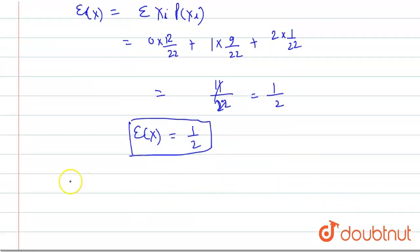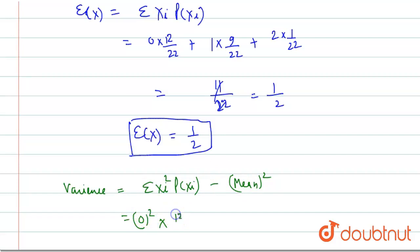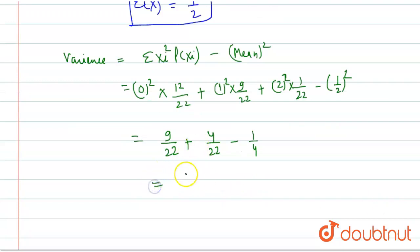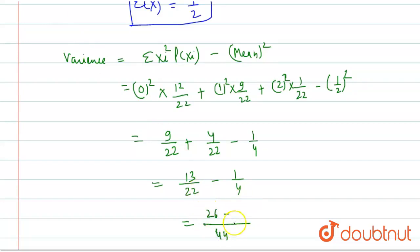Now we find the variance. Variance equals sigma of xi² × P(xi) minus the mean squared. This is 0² × (12/22) + 1² × (9/22) + 2² × (1/22) minus (1/2)². This equals 9/22 + 4/22 minus 1/4, which is 13/22 minus 1/4. Taking LCM as 44, this becomes 26/44 minus 11/44, which equals 15/44. This is the variance.